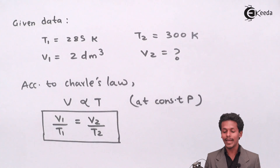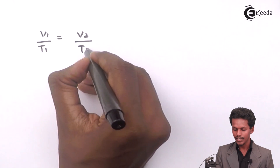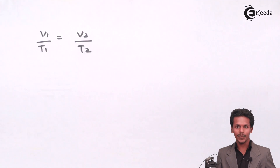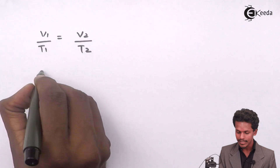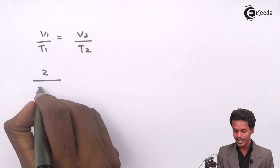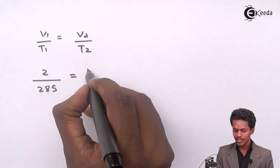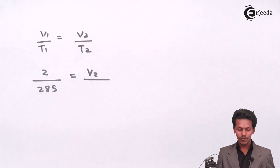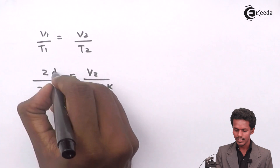Now we substitute the values into the Charles Law formula: V1/T1 = V2/T2. The initial volume V1 is 2 dm³ and T1 is 285 Kelvin. V2 is what we need to find, and T2 is 300 Kelvin.